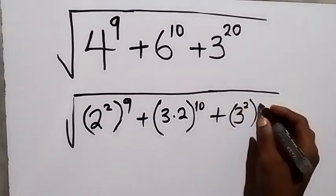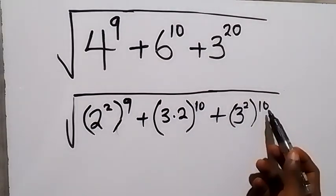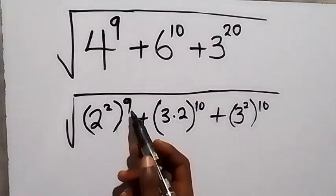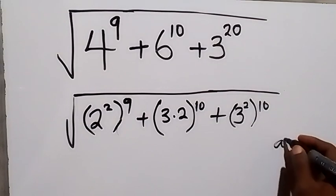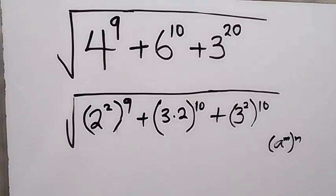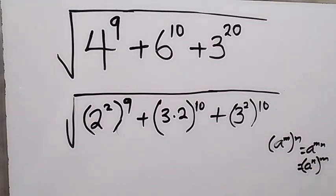Then raise to power 10, because when we use the law of indices, 2 times 10 will still give us 20. We can also interchange the powers using the law of indices: when we have a raise to power m, raise to power n, we can also write it as a raise to power n, raise to power m. So we can switch the powers here, and this will become root.